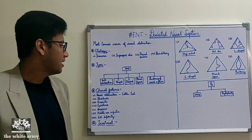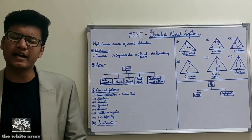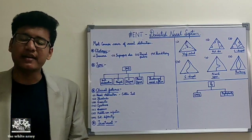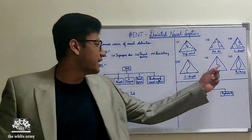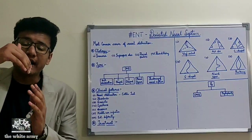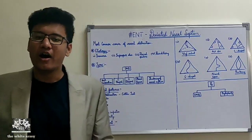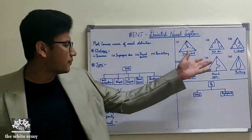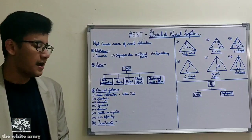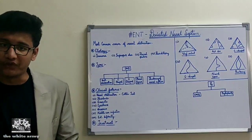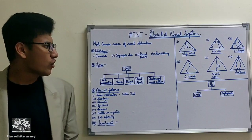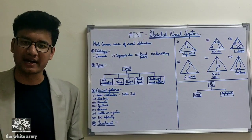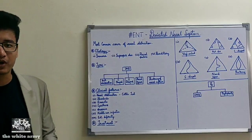A nasal spur is a shelf-like projection between the bony and cartilaginous parts of the nasal septum, just like a shelf on a wall. It compresses the lateral wall of the nose causing headache, and also compresses the vessels in that region, causing their rupture and leading to epistaxis — which is of vital importance in nasal anatomy.